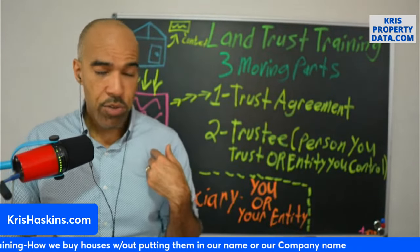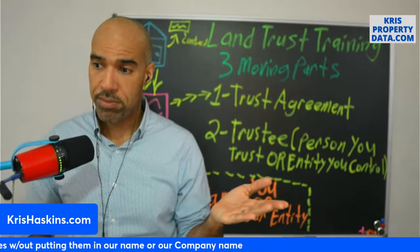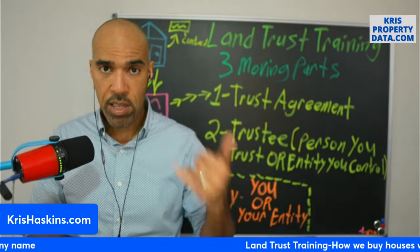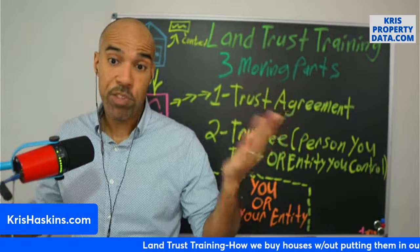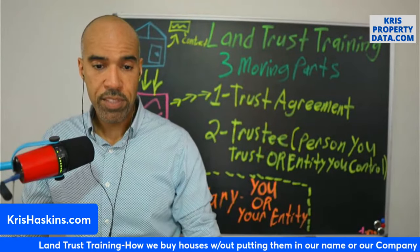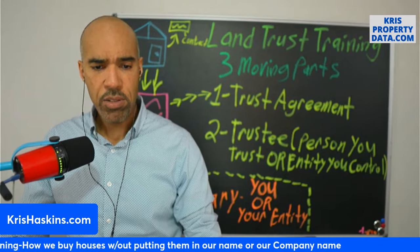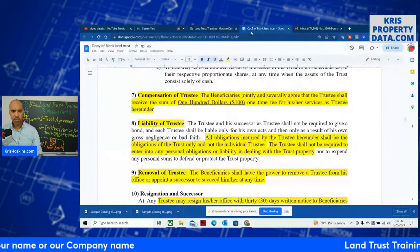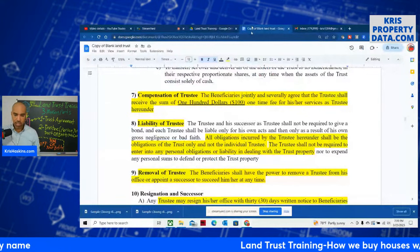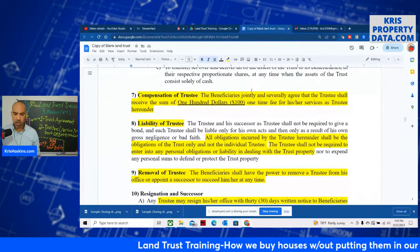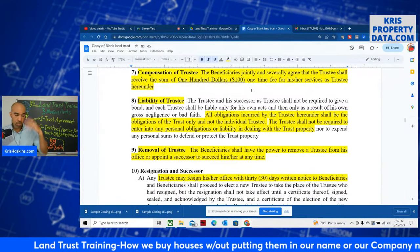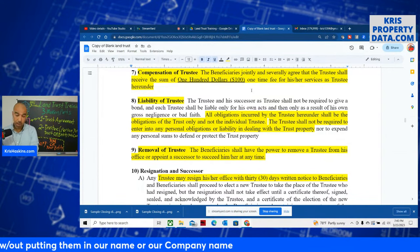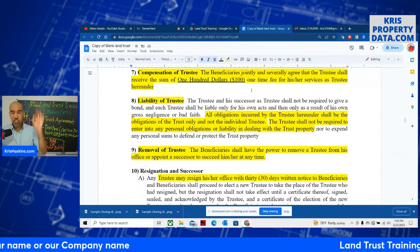The trustee should have the following powers with consent of the beneficiaries: to purchase the property, to sell it at auction, barter, exchange, or dispose of it at any time, to rent or lease the whole or any part of the trust property. So the trustee has power — it's written right there. Number seven, compensation of trustee: the beneficiaries agree the trustee shall receive the sum of $100. We give our trustee a hundred bucks — unless he's doing more work, in which case we pay thousands on top of that. A hundred dollars is just to sign the docs.